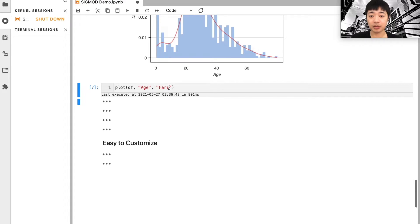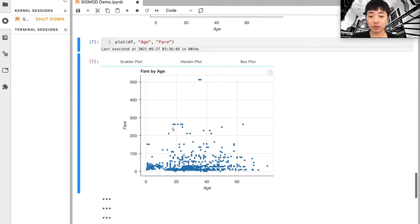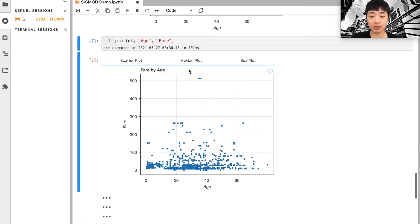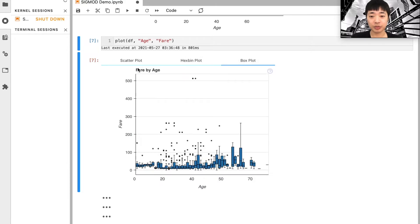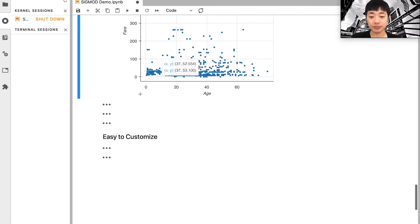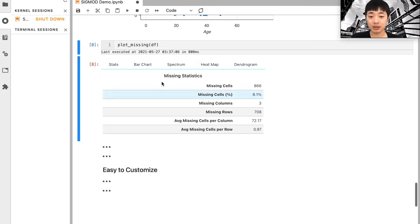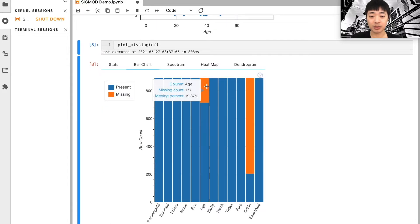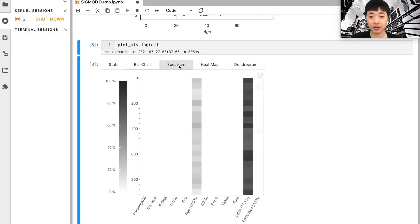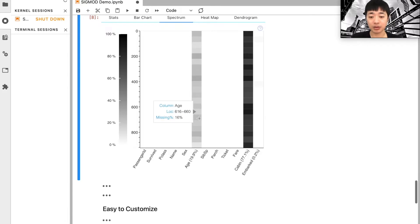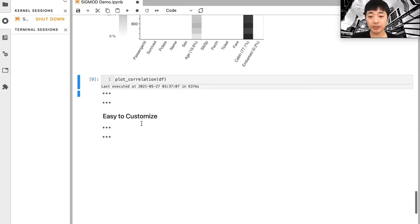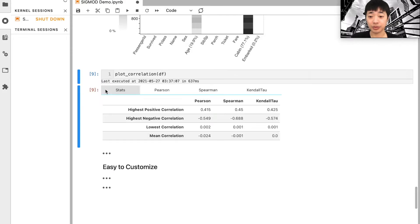Finally, you can pass in two columns. It will give you the scatter plot, hexbin plot, and the box plot, which indicates the relationship between these two columns. You can also use plot_missing to do missing analysis. This will give you some statistics and the missing bar chart, which indicates how many missing values in each column, and also a spectrum that indicates where the missing values are located in this column.